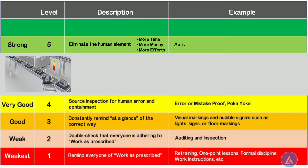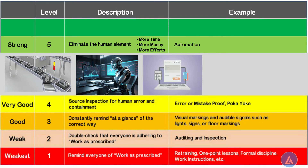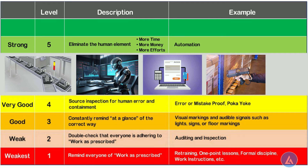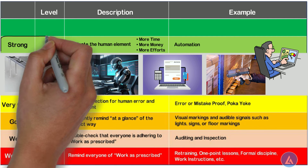Examples include automation. In administrative work, robotic process automation software is used to automate repetitive data entry tasks such as entering invoice details into the system, which reduces human errors, speeds up the process, and frees employees to focus on higher-value tasks. Another example from the warehouse: a warehouse management system uses RFID technology to automatically track inventory levels and reorder stock when items reach a predetermined threshold, helping to avoid stockouts and overstocking and optimizing the supply chain. This level has a significant and strong impact on elimination or reduction of problem frequency and is highlighted in light green.